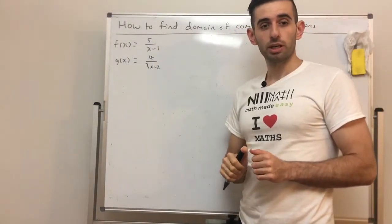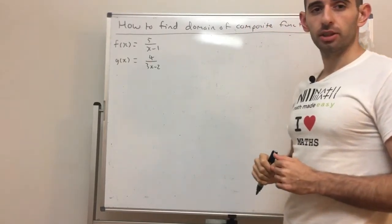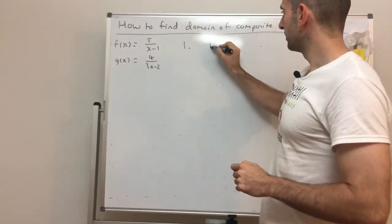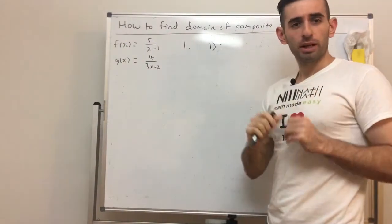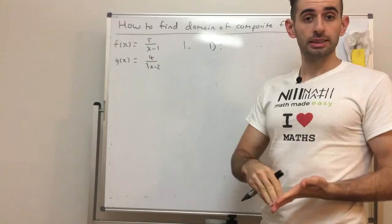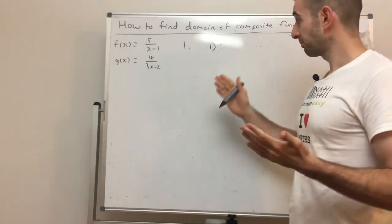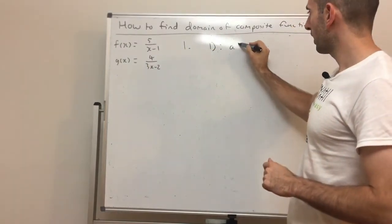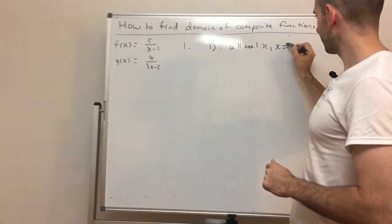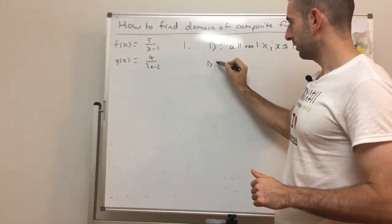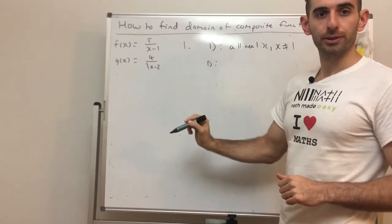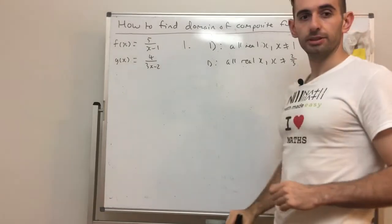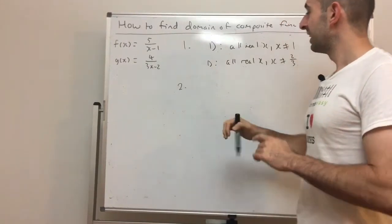Let's go over two examples. We have f(x) = 5/(x−1) and g(x) = 4/(3x−2). Step one: find the domain for each function. For f, x cannot equal 1, so the domain is all real x where x ≠ 1. For g, x cannot equal 2/3, so the domain is all real x where x ≠ 2/3.